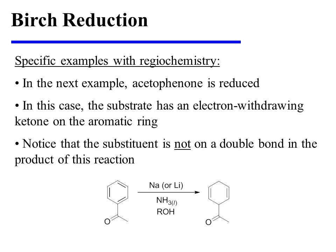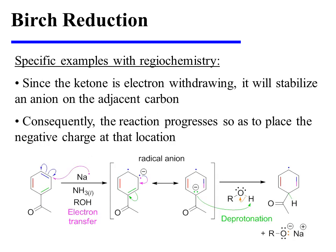Notice that in the product, that substituent resides on one of the sp3-hybridized carbons of the ring. This is the opposite regiochemical outcome from what was observed in the preceding example. The mechanism will explain why this regiochemistry predominates. Since the ketone is electron withdrawing, it would stabilize an anion on the adjacent carbon, and consequently the reaction progresses so as to place the negative charge at that location.